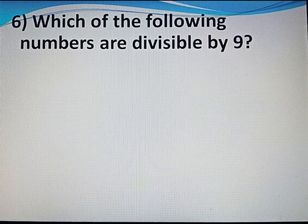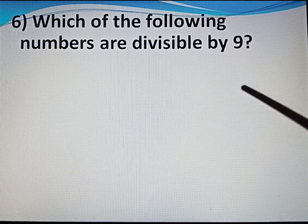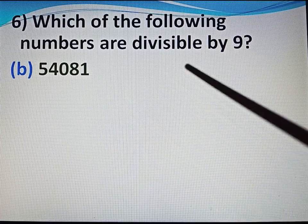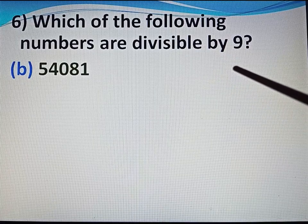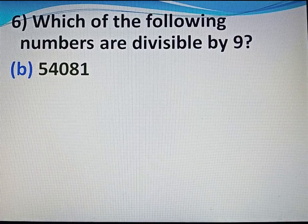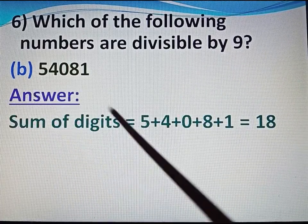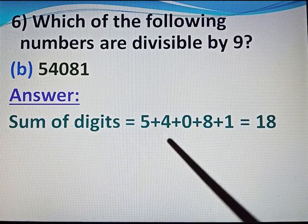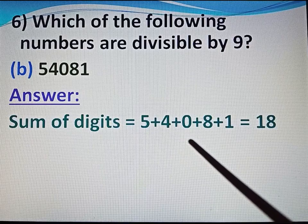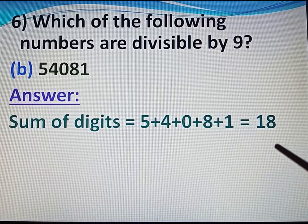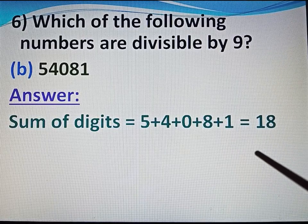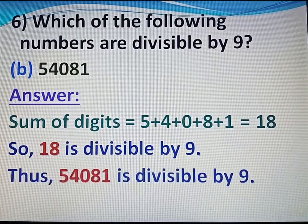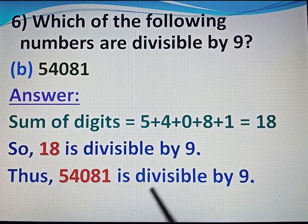Now come to question number 6: which of the following numbers are divisible by 9? Part B: 54,081. For divisibility by 9, the sum of its digits must be divisible by 9. Sum of digits: 5 plus 4 plus 0 plus 8 plus 1 equals 18. 18 is divisible by 9, so 54,081 is divisible by 9.